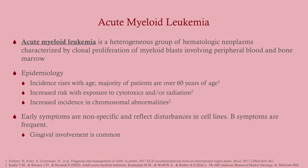AML is a heterogeneous group of hematologic neoplasms characterized by clonal proliferation of myeloblasts in the peripheral blood and bone marrow. Incidence increases with age — the majority of patients are elderly, though it can occur at any age. There is increased risk with exposure to cytotoxic agents or radiation, so consider former cancer patients who were treated and now present with these symptoms. There is also increased incidence with chromosomal abnormalities like Down syndrome.